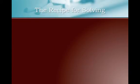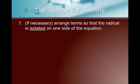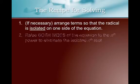All right, so let's go through the recipe for solving. I'm learning that many of you guys like a step-by-step procedure. And so let's go for it. Step one, and you won't always have to do this, but if necessary, arrange the terms so that the radical is isolated on one side of the equation. So again, that means if I have any coefficients on the radical or a plus or minus a number, I need to move those to the other side and get that square root all by itself.